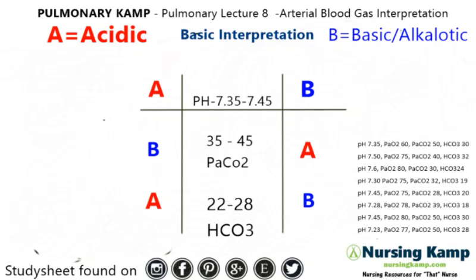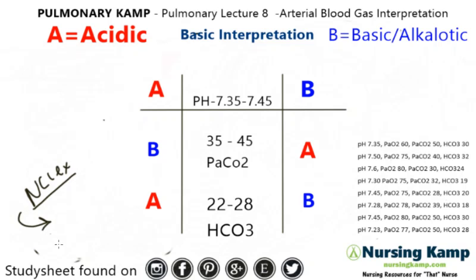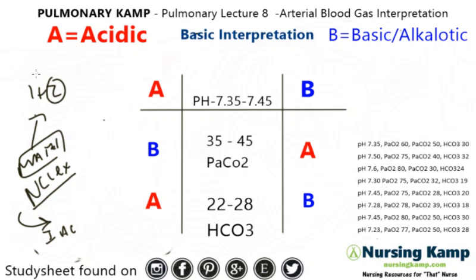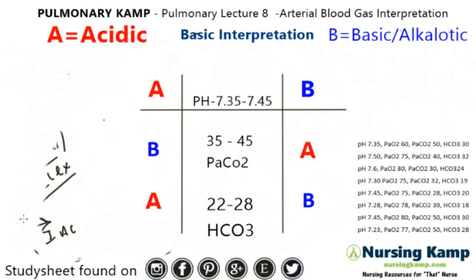When you're looking at an ABG on an NCLEX question, it's just like a lab value — if you know your ABGs, you just interpret. It's just like a math question: if you know your math, it's just equations, one plus one equals two. It's just a new skill to learn, and this ABBAB method is the easiest way to do it.